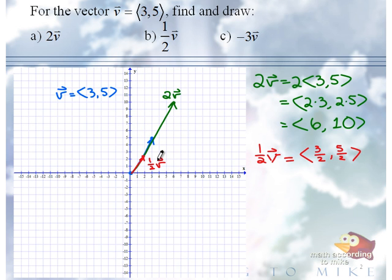And negative 3 vector V, what's going to happen there? Yep, so negative 3 vector V, what is the component form?